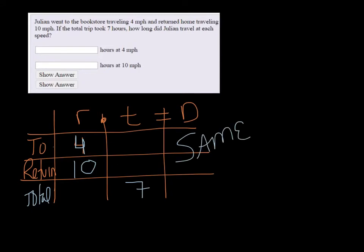Alright, so we don't know how long it took him to get to the bookstore, so we're just going to call it t. But we do know however long it was, say it was two hours, and if the total trip was seven hours, then that means the return trip took five hours. So you're subtracting. So we don't know how long it was, so we're just going to do seven minus t there.